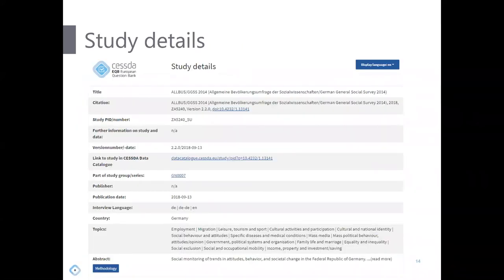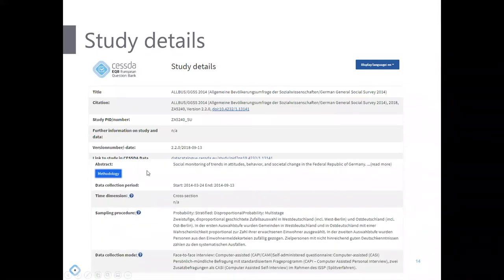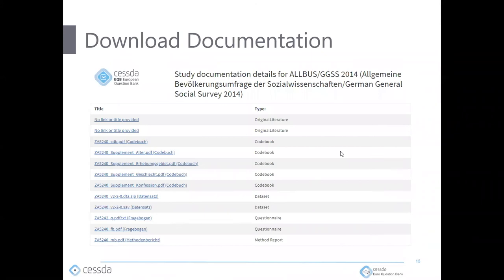Here we see the study details page. Each question belongs to a study, so you see the study information right away — what languages it is available in, and additional information like the methodology, including time dimension, sample procedure, and data collection mode. If present in the metadata, we also link directly to additional material of a study, like the codebook, dataset if published, or the questionnaires.